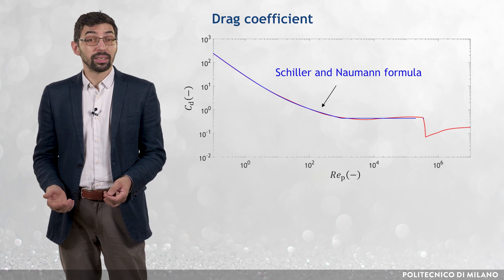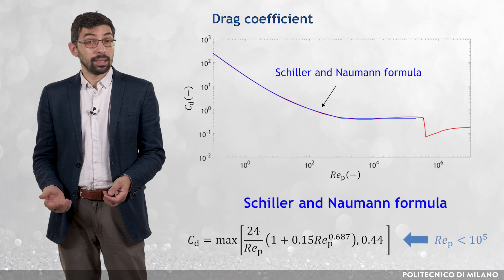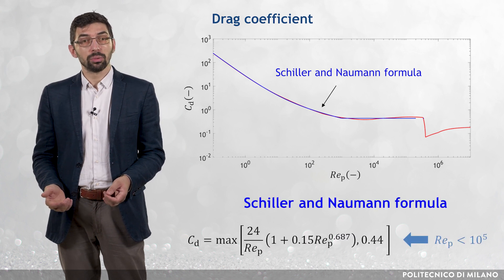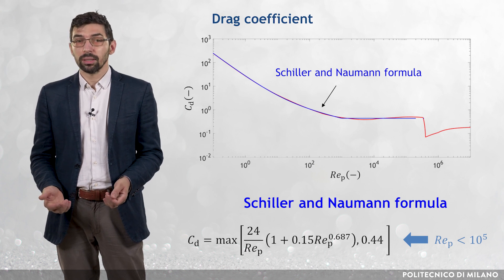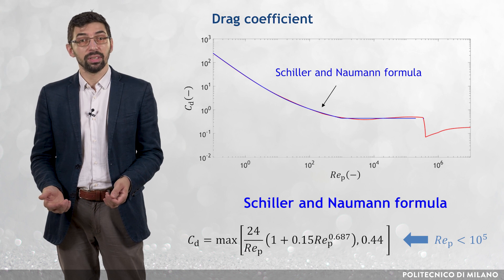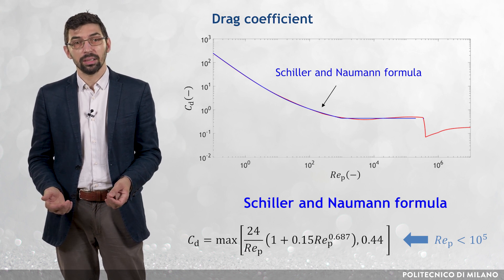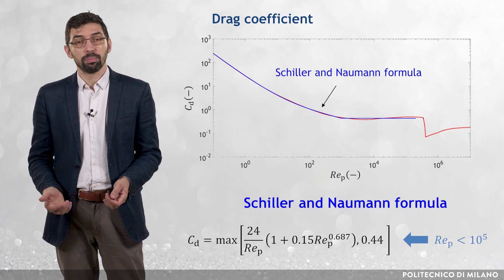up to particle Reynolds number of about 10^5. It says that Cd is equal to the maximum of two terms. The former is 24 divided by Rep times (1 plus 0.15 times Rep elevated to 0.687). The latter is 0.44.